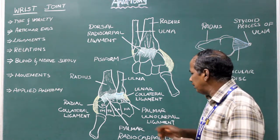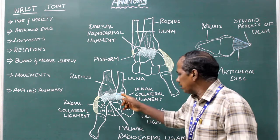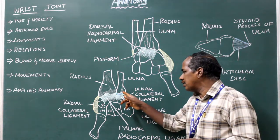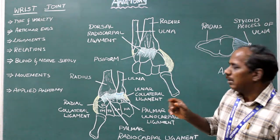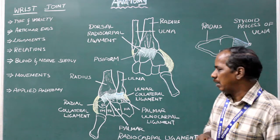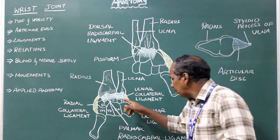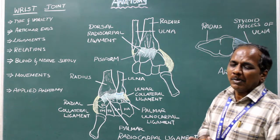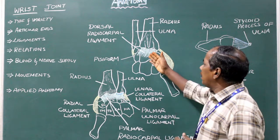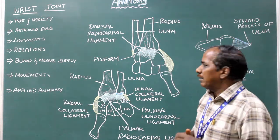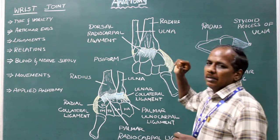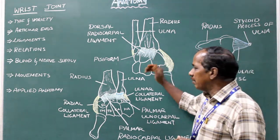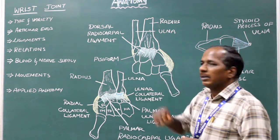Proximally it is also attached to the anterior margin of the articular disc and the base of the styloid process of ulna. Distally it is attached to the anterior surface of the triquetral and lunate bone. Dorsal radiocarpal ligament: proximally attached to the posterior margin of the lower end of radius; distally to the posterior surface of scaphoid, lunate, and triquetral bones.